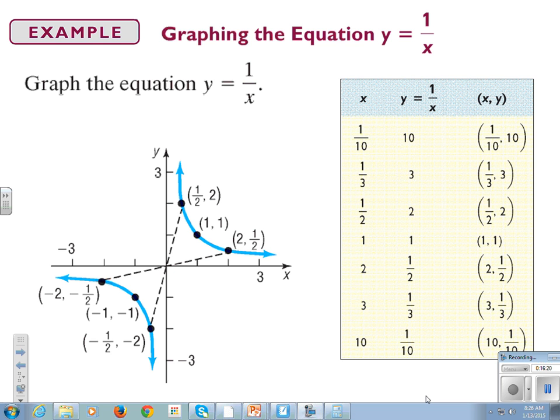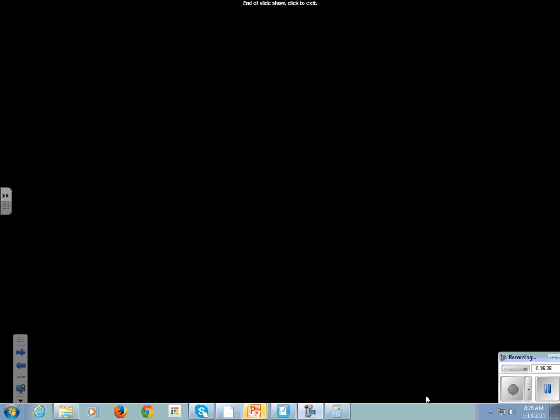If I put in negative 3 to positive 3, I could get out the shape of this graph. Now we have a level of sophistication where we can look at a function and go, okay, I know it's dividing by a number, 1 over x. So I'm going to put in a fraction to kind of get out a nice whole number.